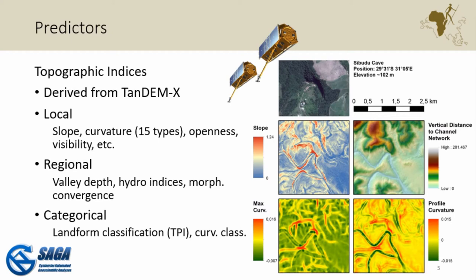The challenge is distinguishing a slope with a rock shelter from a structural slope — because it's a 2.5D model, not a 3D model, we can't look into the cave but can only capture features from above. We had all these predictors and put them into the model, but got poor results — roughly half of the map was predicted as a rock shelter, which makes no sense.